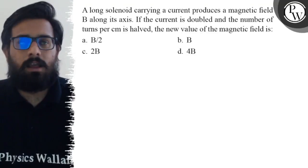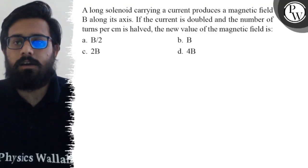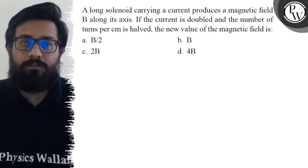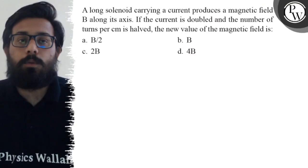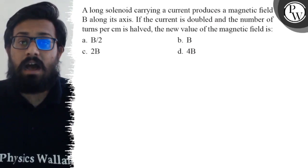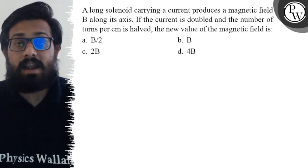Hello, so let's see the question. A long solenoid carrying a current produces a magnetic field B along its axis. If the current is doubled and the number of turns per centimeter is halved, the new value of the magnetic field is...